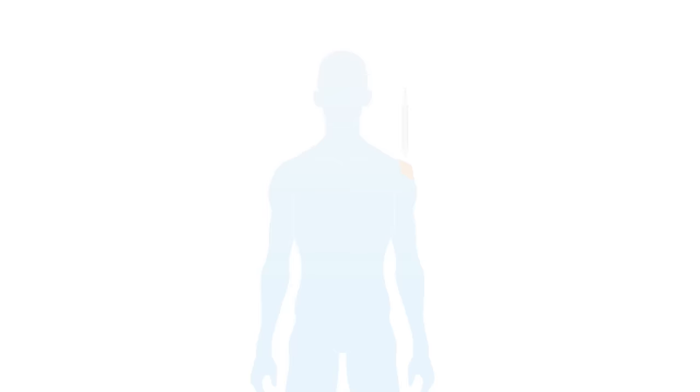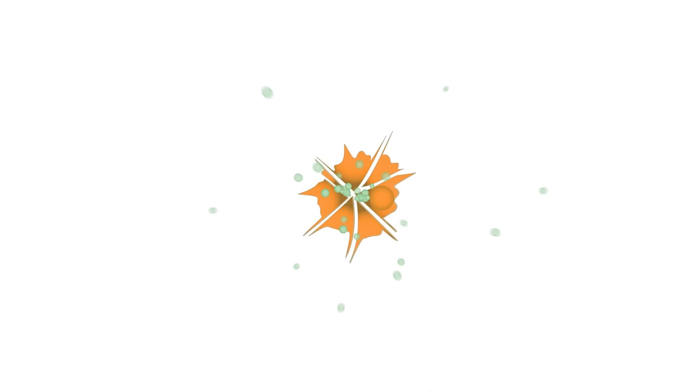There are two main ways that oncolytic viruses help fight cancer. First, they kill cancer cells directly when they infect these cells and cause them to burst. Second, when the cancer cells die, they release telltale markers called antigens into the body.